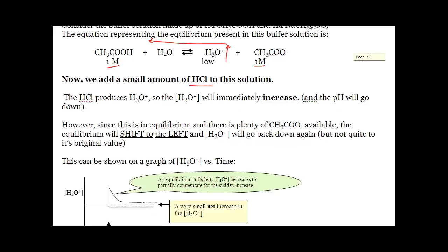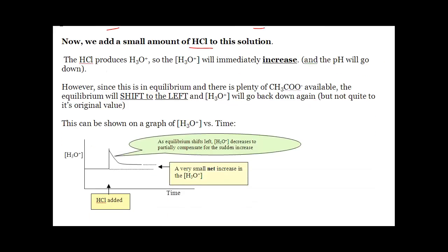We graphed a bunch of these in chapter 2 and we'll graph them again here in chapter 4. At equilibrium, the concentration of H3O⁺ was constant. When I added a bunch of HCl, H3O⁺ spiked up and came back down — not quite to the original line. Again, this buffer is resisting the change when I add an acid.